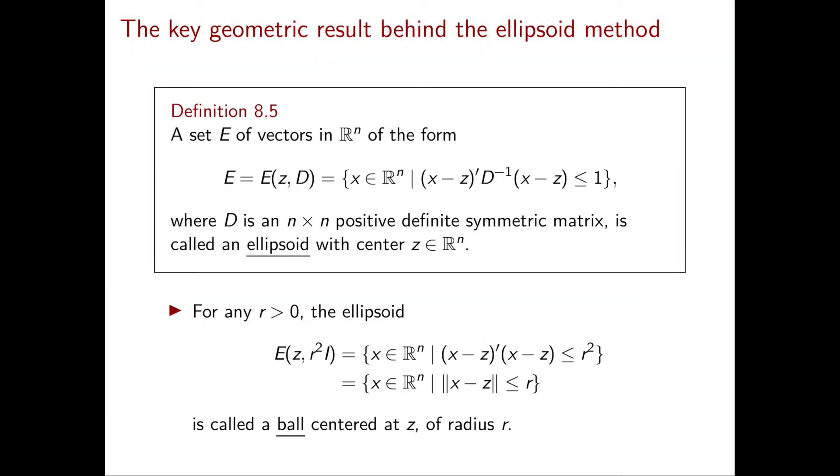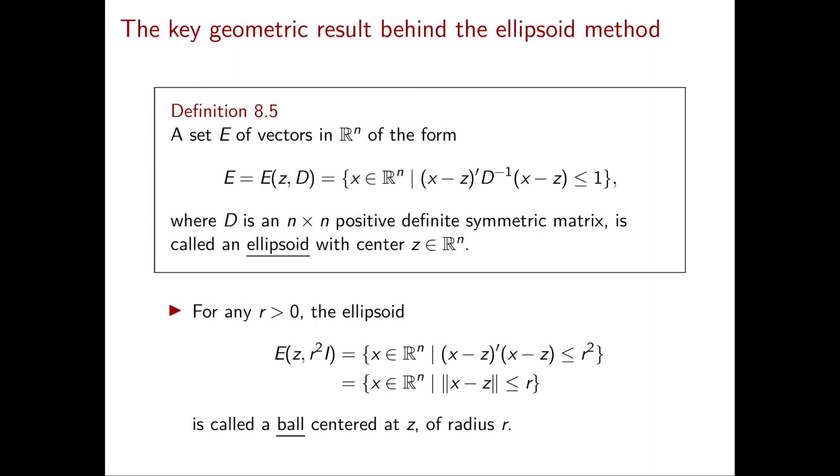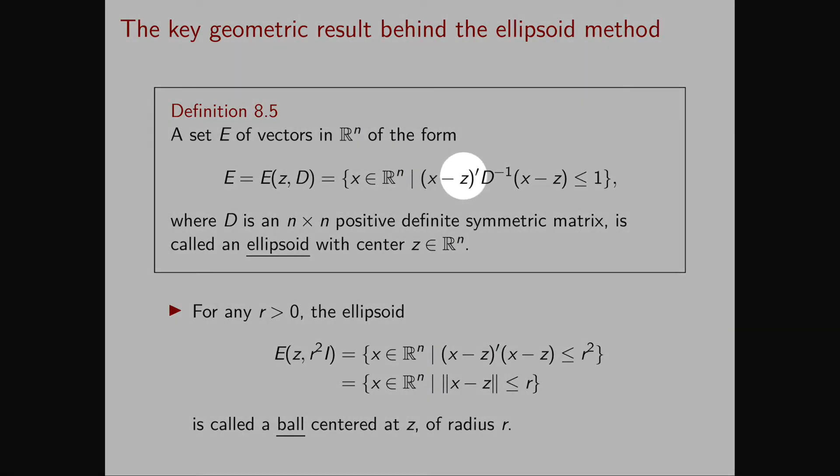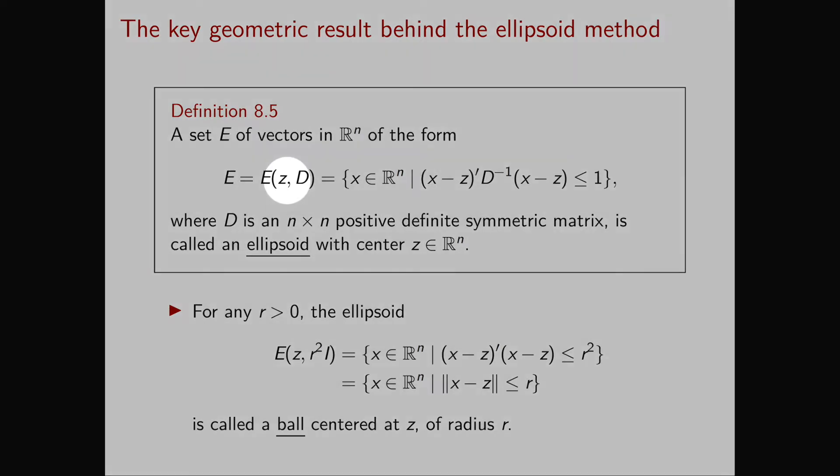Now we are finally ready to define an ellipsoid. An ellipsoid is a set of vectors in R^n that satisfy (x minus z) transpose D inverse (x minus z) less than or equal to 1, where D is a positive definite symmetric matrix and z is a vector in R^n which is called the center of the ellipsoid. We denote this ellipsoid by E(z,D) or simply by E.